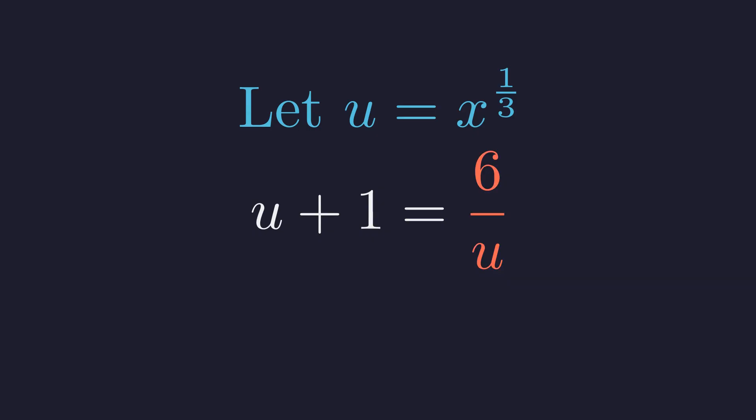To get rid of this fraction, let's multiply both sides by u. And just to be clear, u can't be zero, which makes sense because x can't be zero either. Multiplying through, we get u times the quantity u plus one equals six. Expanding the left side, we have u squared plus u equals six. And there it is. This is just a quadratic equation in disguise.